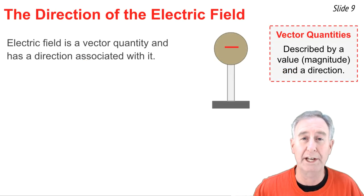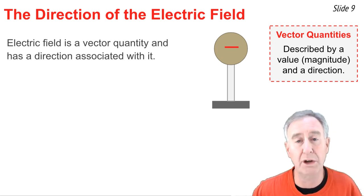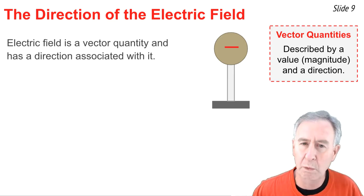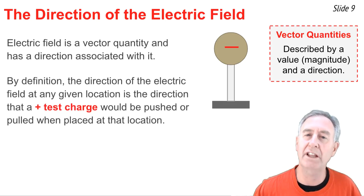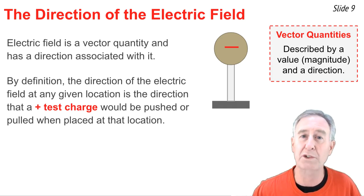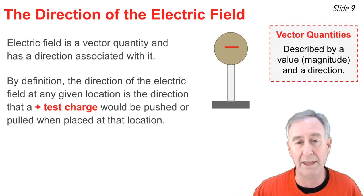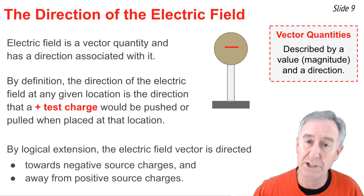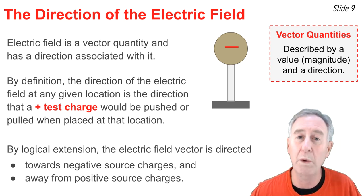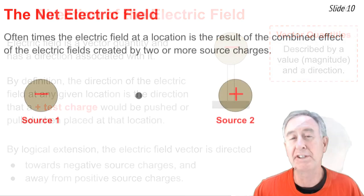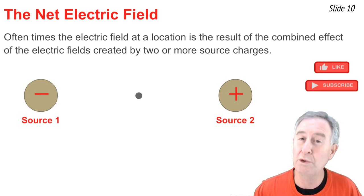Electric field is a vector quantity, and like any vector quantity, it is fully described by two things: a numerical magnitude and a direction. By definition, the direction of the electric field at any given location around a source charge is the direction that a positive test charge would be pushed or pulled when placed at that location. By logical extension, the electric field vector is always directed towards negative source charges and away from positive source charges.